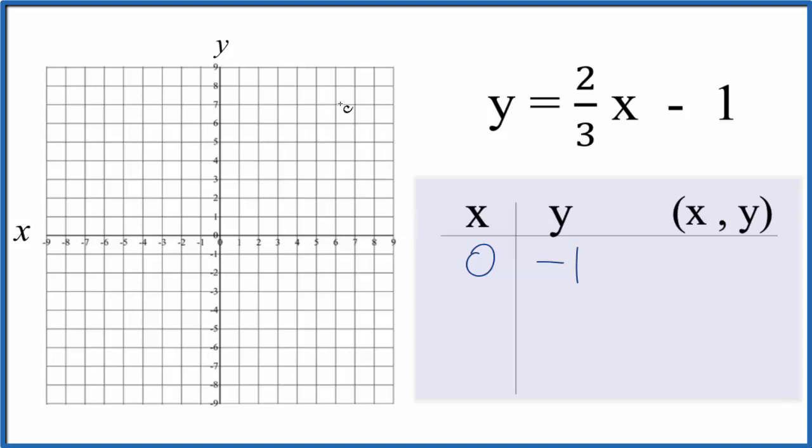We want to choose values that'll fit on the graph paper. It'd be nice if they were whole numbers. So if we put three in for x, two-thirds times three is two minus one, which gives us one.